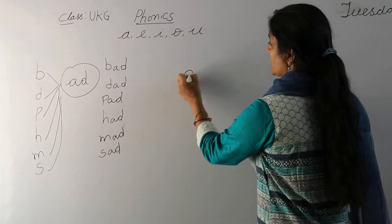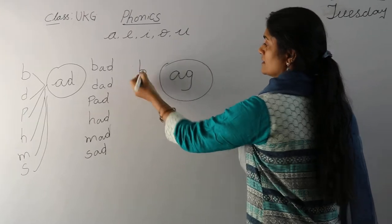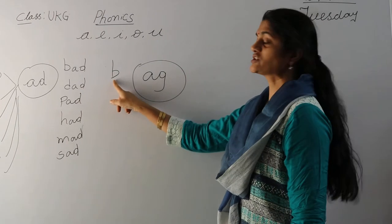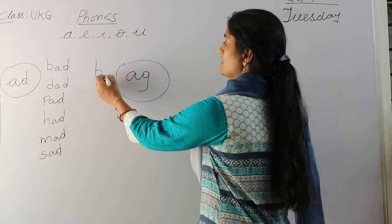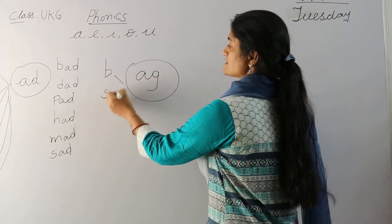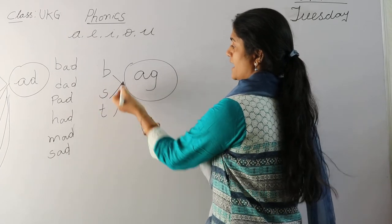Now we did A-G. A-G means ag. Which letter do you see here? That's B. That's right. B. B-ag, bag. S-ag, sad. T-ag, tag.